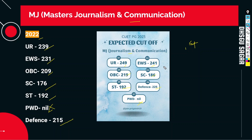And if you are looking for the expected cutoff, MJ expected cutoff will be: UR 249, EWS 241, OBC 219, SC 186, ST 192, Defense 225, PWD not available. So what is the cutoff? This is the first merit list. The first merit list that will remain in the first list.